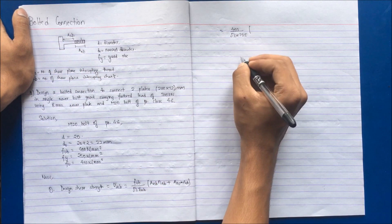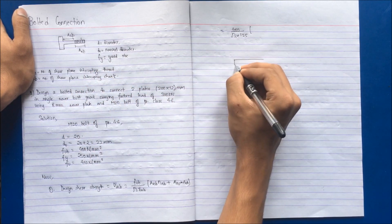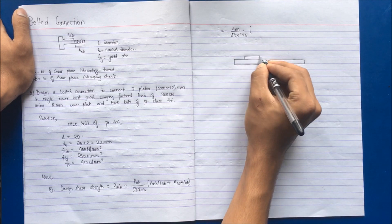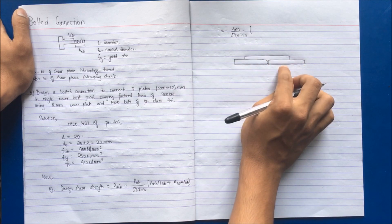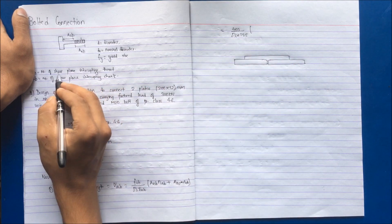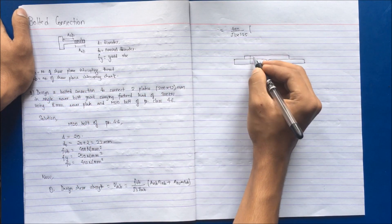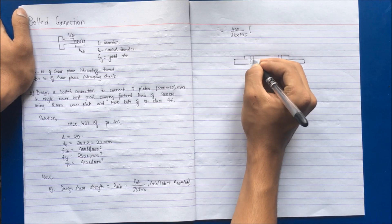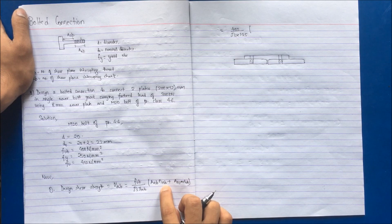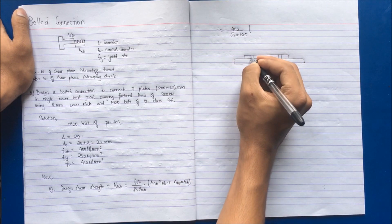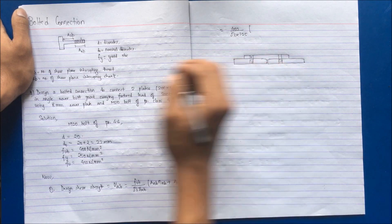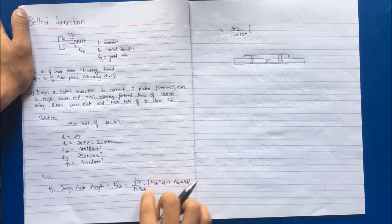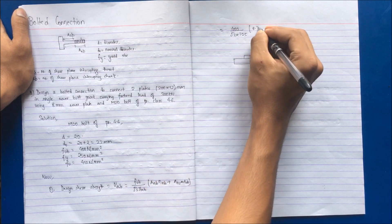To understand this: for a single cover butt joint, these are the two plates to be connected — shown in elevation. A single cover plate is provided and the bolts are placed on it. The number of shear planes intercepting the threaded portion, NNB, is 1 in this case. The number of shear planes intercepting the shank, NSB, is 0, because the shank portion is not intercepted. So NNB = 1 and NSB = 0.